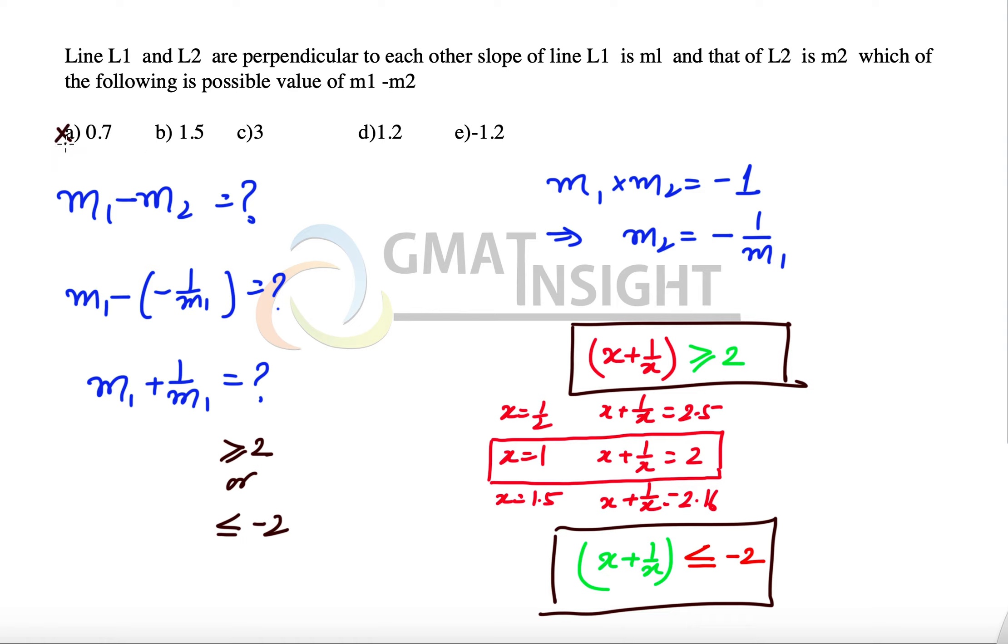Option a is between minus 2 and plus 2, option b as well, option c is not, option d is between minus 2 and plus 2, option e as well. So we are left with only one option, that is c, and c becomes our answer.